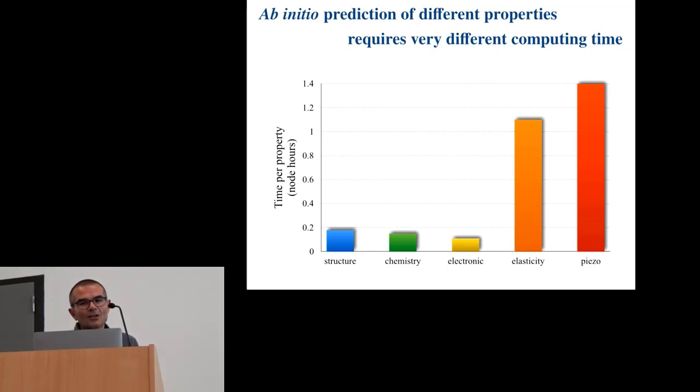Now, the time that is required to compute a given property depends a lot on the property that you're computing. If you look at the structure, the chemistry, or electronic properties, that's quite a small amount of time. If you move to more advanced properties, such as the response properties, the amount of time that is needed to do the calculation increases significantly.